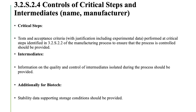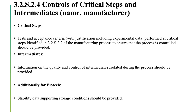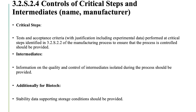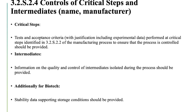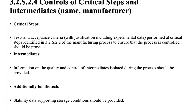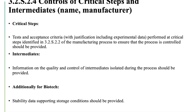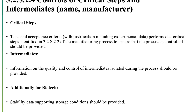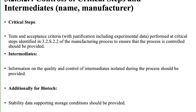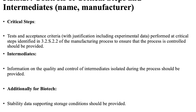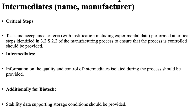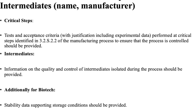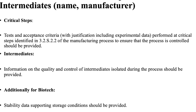3.2.S.2.4 Controls of Critical Steps and Intermediates (Name, Manufacturer): Critical Steps — tests and acceptance criteria, with justification including experimental data, performed at critical steps identified in 3.2.S.2.2 of the manufacturing process to ensure that the process is controlled, should be provided. Intermediates — information on the quality and control of intermediates isolated during the process should be provided. Additionally, for biotech, stability data supporting storage conditions should be provided.